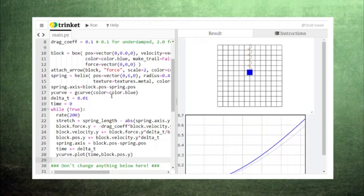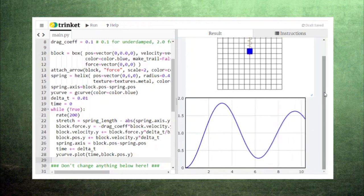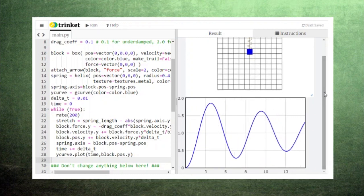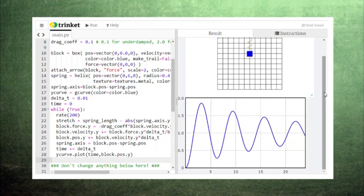Each time the computer repeats the loop, it will add one more data point to the graph representing the latest update to the block's motion. The resulting graph shows a lot more information about what's going on with our spring.